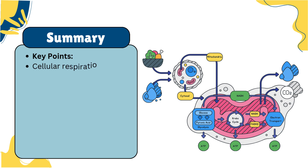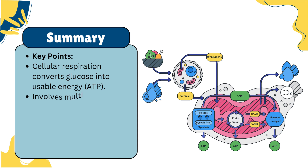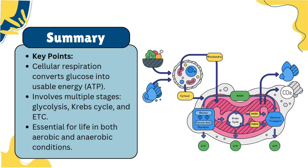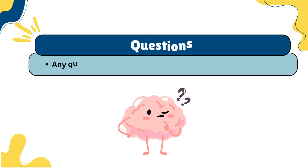In summary, cellular respiration is a multi-stage process that converts glucose into ATP, supporting various cellular functions. It includes glycolysis, the Krebs cycle, and the electron transport chain, and it can occur in both aerobic and anaerobic conditions. Understanding this process is crucial for appreciating how living organisms sustain energy. Thank you for your attention. I'd be happy to answer any questions or engage in discussion about cellular respiration.